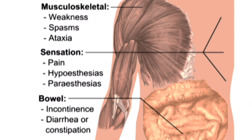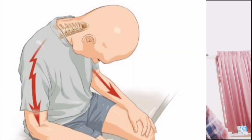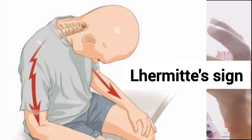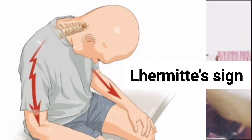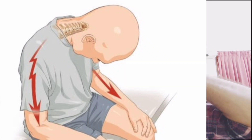One more important sign in multiple sclerosis is Lhermitte's sign. What the patient feels is an electric shock passing down the back of the body when the neck is flexed. Electric shock felt on the back of the body when the neck is flexed — that is Lhermitte's sign, a particular sign seen in multiple sclerosis patients.